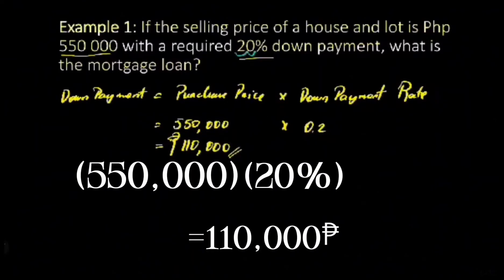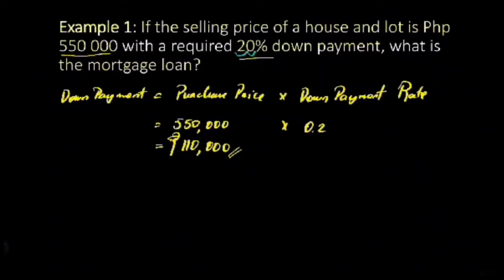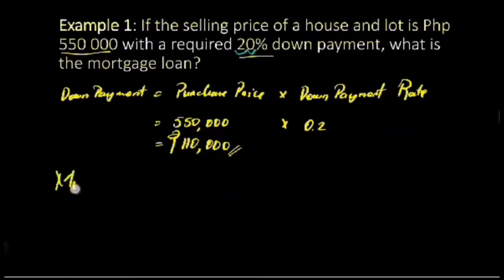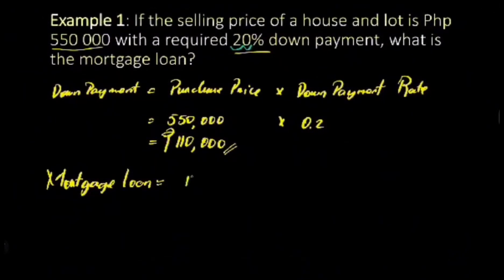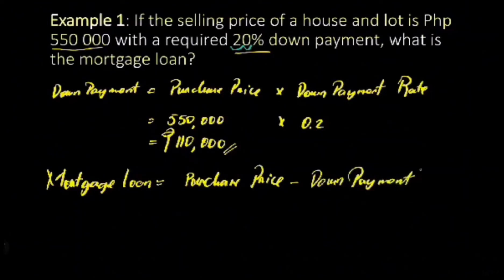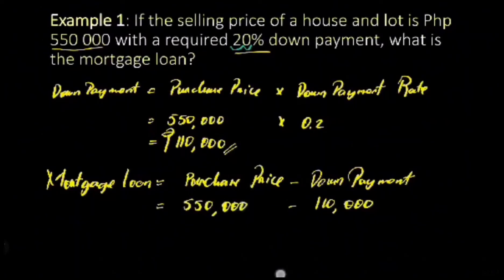So that means 110,000 pesos is the initial payment made by the buyer, Mr. De La Cruz, when purchasing the property — in this case, 20%. The next question is the mortgage loan. The mortgage loan is equal to the purchase price minus the down payment, which we just computed. The down payment is 110,000 pesos and the purchase price is 550,000 pesos, so the mortgage loan is 440,000 pesos.